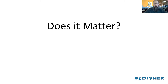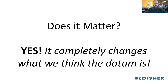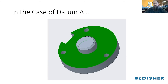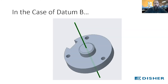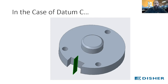I want to talk about why that is, because some people tell me it doesn't matter — but it completely changes what we understand the datum to be. With datum A offset from the dimension, we're only looking at that flat surface. Datum B, because it's in line with the dimension, is actually pointing to the axis of that boss. Datum C is the center plane that bisects the slot feature on the cap.